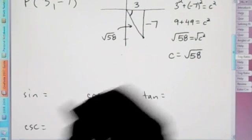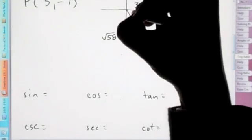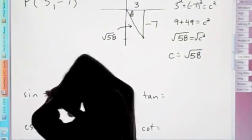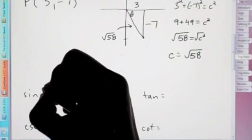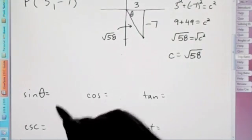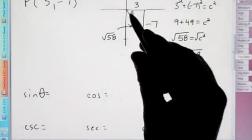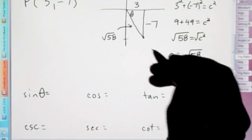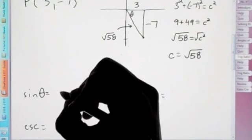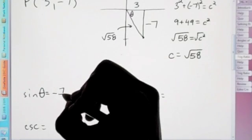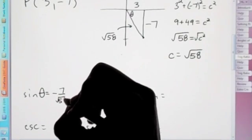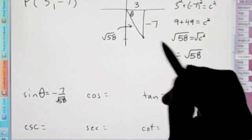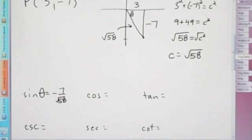So sine, if we want to get technical, we could put theta here and say this is sine of theta. But for the sake of this, we don't need to put theta in right now. So sine of theta is opposite over the hypotenuse. So negative 7 over the square root of 58. And remember, for this assignment, you don't have to rationalize the denominator for this problem.